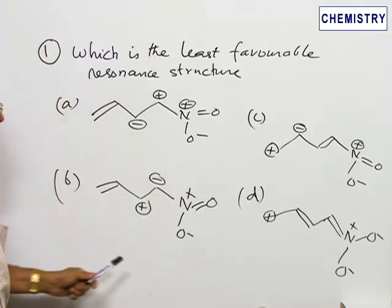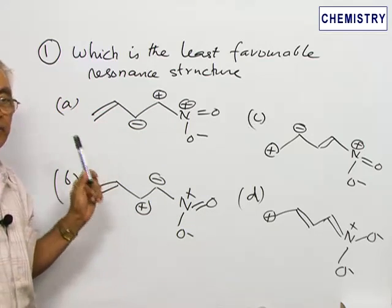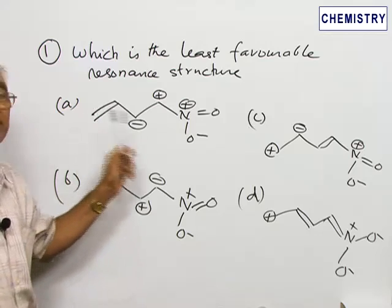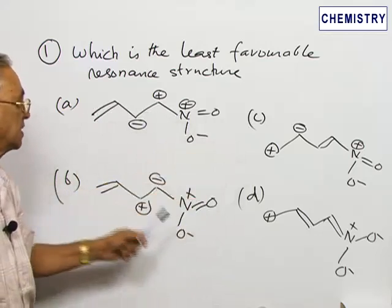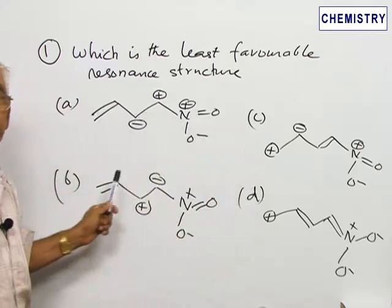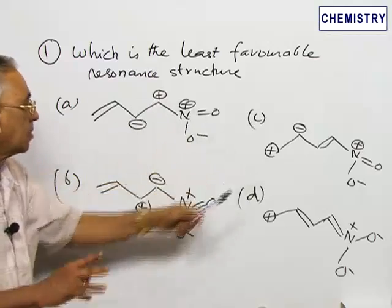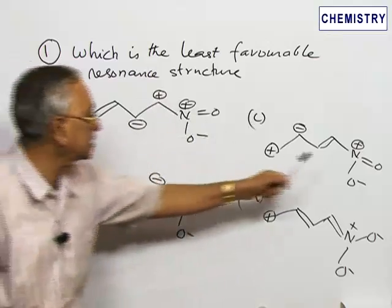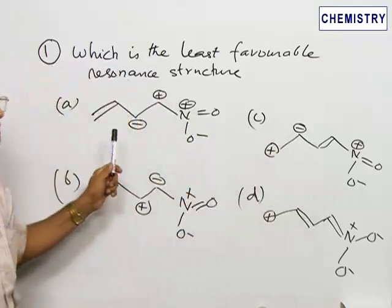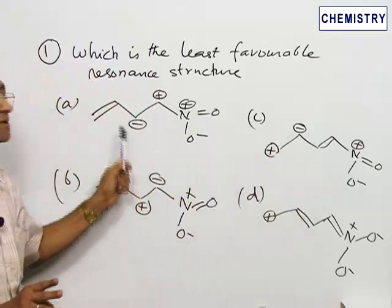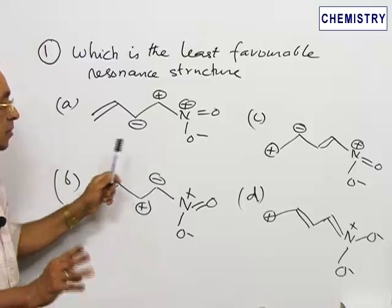Normally we find resonant structures are generally favorable when there are no charges available with these structures, but in these structures all the four structures we find that somewhere some charges are located. Although the molecule as a whole is neutral, there are two positive charges and two negative charges, the molecule as a whole is neutral, but charges are distributed in the molecule.